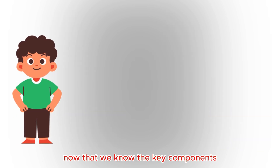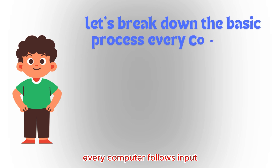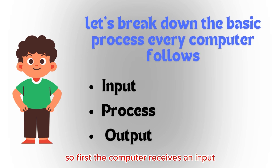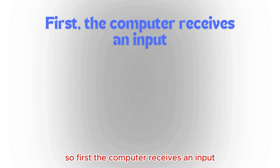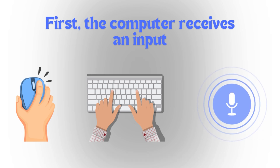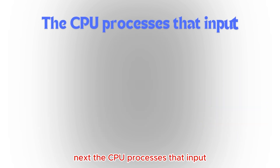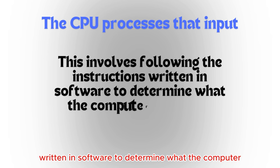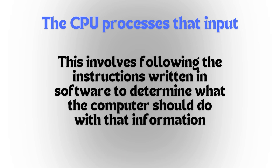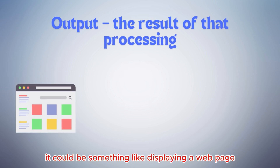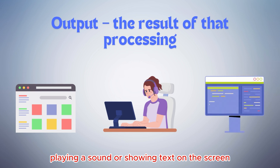Now that we know the key components, let's break down the basic process every computer follows: input, process, and output. First, the computer receives an input — this could be a click of a mouse, a key pressed on the keyboard, or even a voice command. Next, the CPU processes that input. This involves following the instructions written in software to determine what the computer should do with that information. Finally, we have the output, the result of that processing. It could be something like displaying a web page, playing a sound, or showing text on the screen.